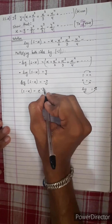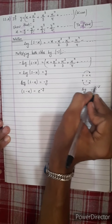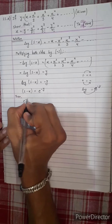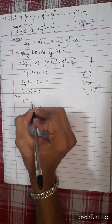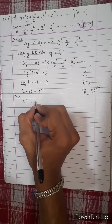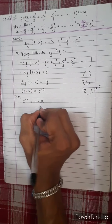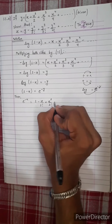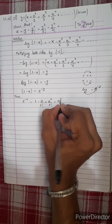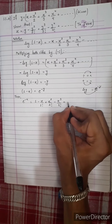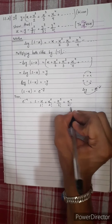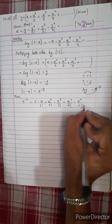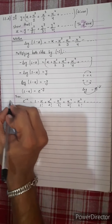This is the power of y. Then we have the formula: e to the power minus x equals 1 minus x by 1 factorial plus x squared by 2 factorial minus x cubed by 3 factorial plus x to the power 4 by 4 factorial minus x to the power 5 by 5 factorial plus dot dot dot. This is the formula.